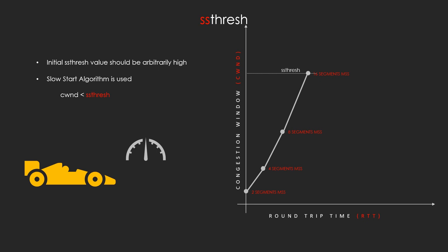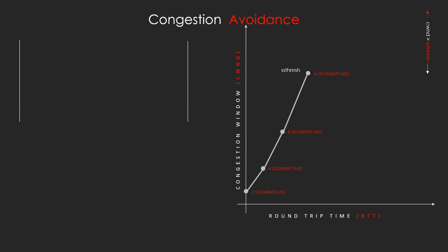Just as you adjust your driving speed to maintain safe and efficient flow on a congested highway, ssthresh helps control congestion in the network. Once the congestion window reaches the threshold, it enters the congestion avoidance phase. In congestion avoidance, TCP aims to maintain stable and efficient transmission — instead of increasing the send rate exponentially as in slow start, the sender increments the transmission rate in a more conservative manner.